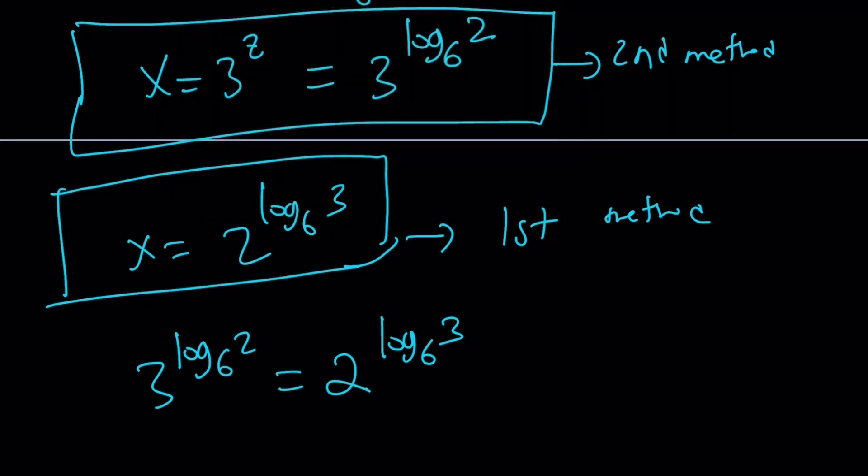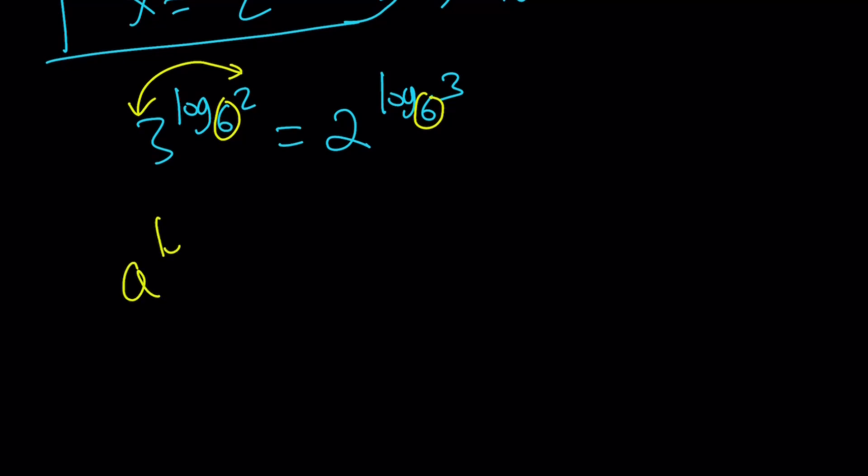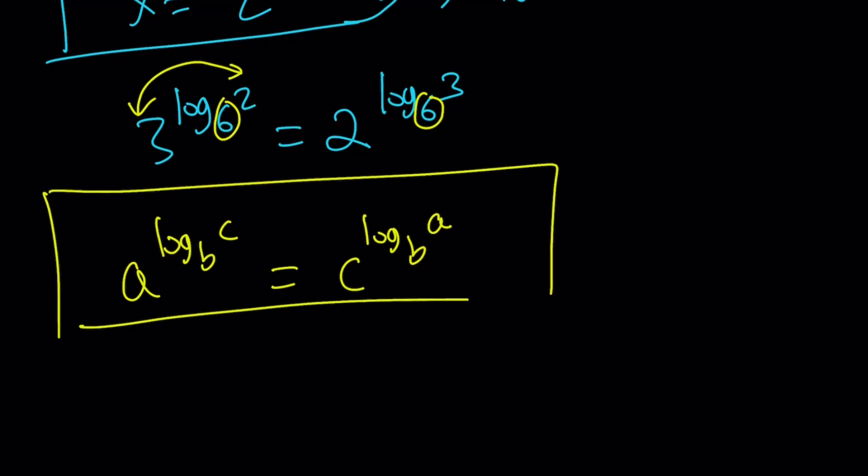Why? Because 3 to the power log 2 with base 6 is the same as 2 to the power log 3 with base 6. Notice something interesting. This is a special property of logs. If these two bases are the same, these numbers can interchange. You have something like a to the power log c base b, you can write it as c to the power log a base b. Same base is being used, but the base is in the exponent. That is a very special property of logs.